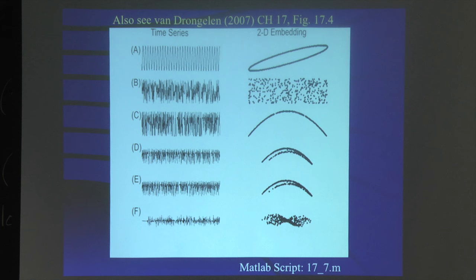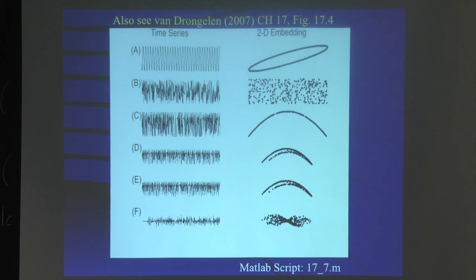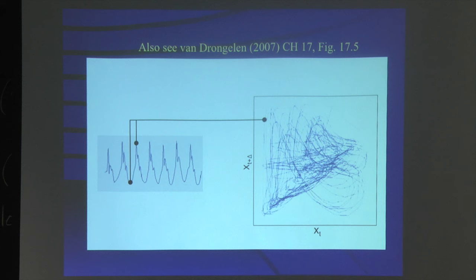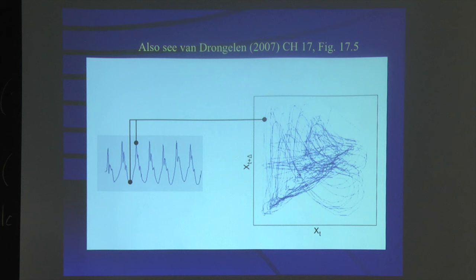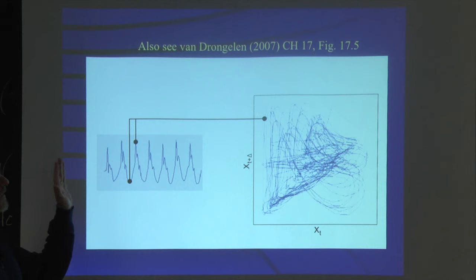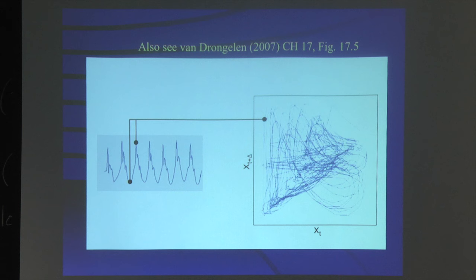The question is whether in seizures and in our brain situation we are dealing with a strong nonlinearity. If so, we might have a shot at predicting, provided the horizon is practically usable. For that reason, you start to do what we call embedding of the EEG. You make a certain delay, plot the point with the delay versus the first point, move over your waveform, and you get an embedded structure that tells you something about the underlying process.